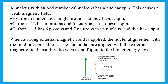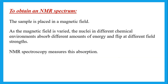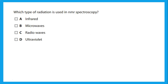NMR is due to the presence of a strong external magnetic field. The nuclei align either with the field or opposed to it. Nuclei aligned with the external magnetic field absorb radio waves and flip to the higher energy level — that is how we get a spectrum. To obtain an NMR spectrum, the sample is placed in a magnetic field. As the field is varied, nuclei in different chemical environments absorb different amounts of energy and flip, and NMR spectroscopy measures this absorption.